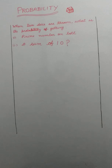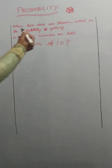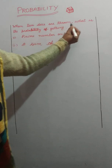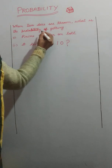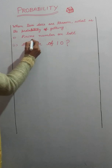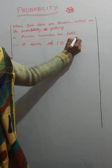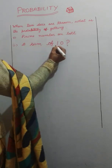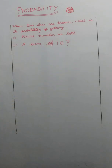Hello dear friends, welcome back to my channel. This is Manvinder Bhatia with another video on the topic of probability. Our question is: when two dice are thrown, what is the probability of getting prime numbers on both, or a sum of 10?